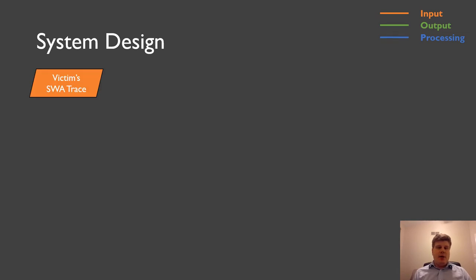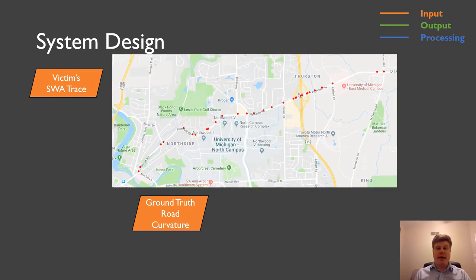And this leads to our system design. So as input, we have the victim's steering wheel angle trace that got collected by these telematics platforms. And we are also going to have a ground truth database of road curvatures that we can derive very easily through publicly available map APIs, like Google Maps or OpenStreetMaps, which we're using in the experimental study of this work. So this is one road in Ann Arbor, Michigan. And the red dots indicate intersections, so where the driver can turn right or left. And the road portion between two of these red dots, we're going to refer to that as road segment in the following.